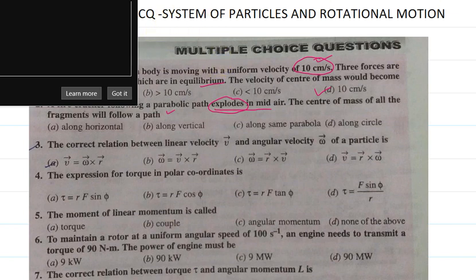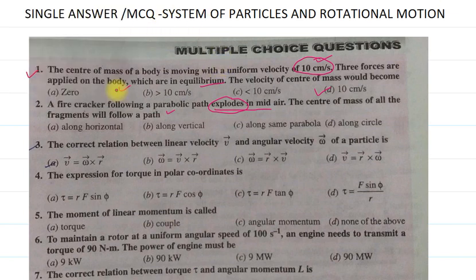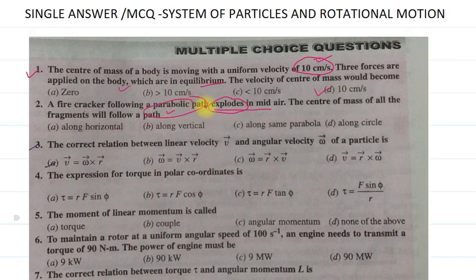Because no external forces are involved, the center of mass will still follow the same path — that is parabolic. So the answer should be parabolic along the same parabola. Option C is the answer, because no external forces are involved, so the center of mass of the fragments will follow the same parabolic path.